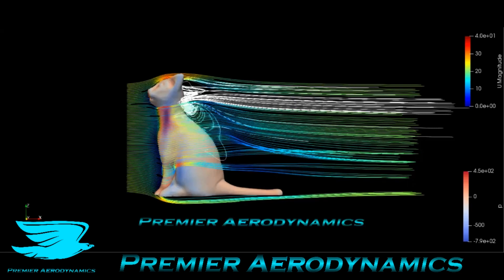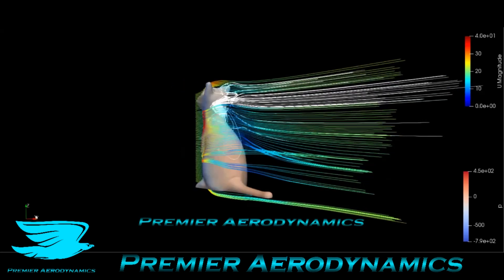What's up everyone? This is the aerodynamics of a cat. I've got some streamlines here — the flow is going from left to right. I plotted two different ones: ones in color, which is the U-magnitude, and then ones in white. The white ones are just behind the head, and you'll see in a minute why these ones are so cool.